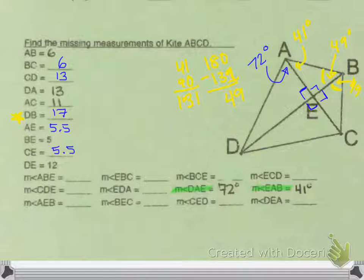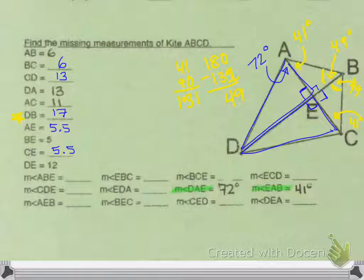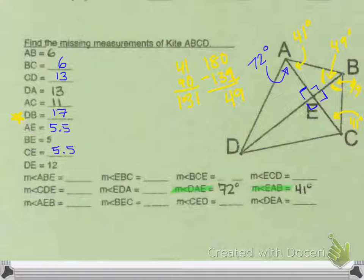One other thing I know about the kite is that these two smaller triangles are congruent to each other. So if this angle over here is 41, then this little angle right here is also 41. I also know that this triangle here is congruent with this one here in blue. So if this angle over here is 72, then this one over here will also be 72.